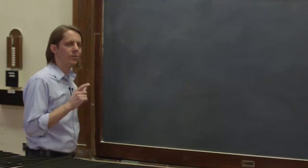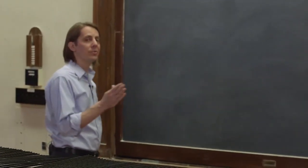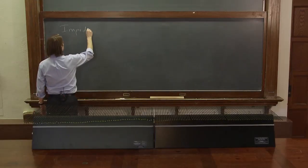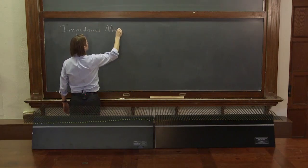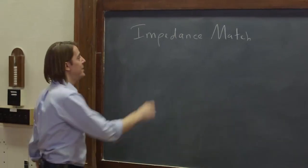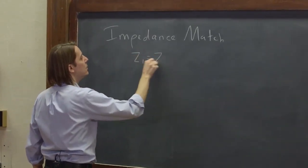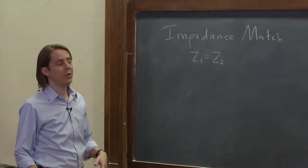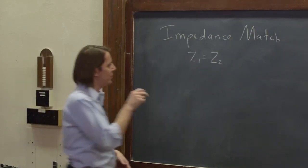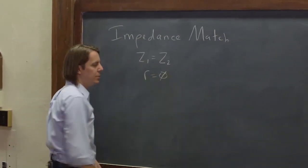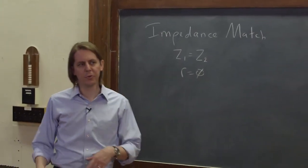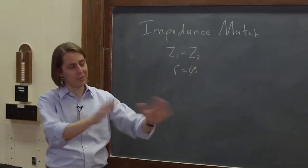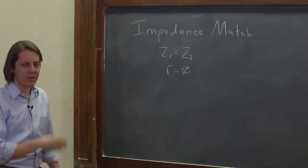We've talked about reflections and transmissions at boundaries of two different impedances. Now let's look at another important thing called an impedance match. An impedance match just means two sides where Z1 equals Z2. And this is interesting because if Z1 equals Z2, R equals zero — nothing will reflect back. So if you're trying to create a wave system and you don't want anything coming back, for the highest possible transmission efficiency, you want the whole thing to be impedance matched.